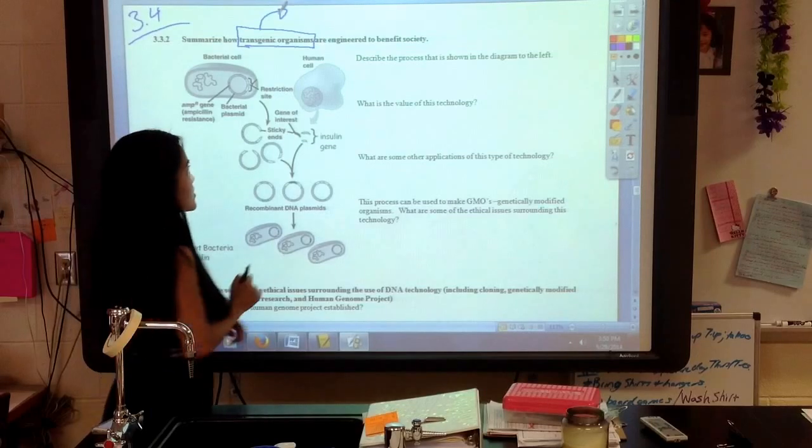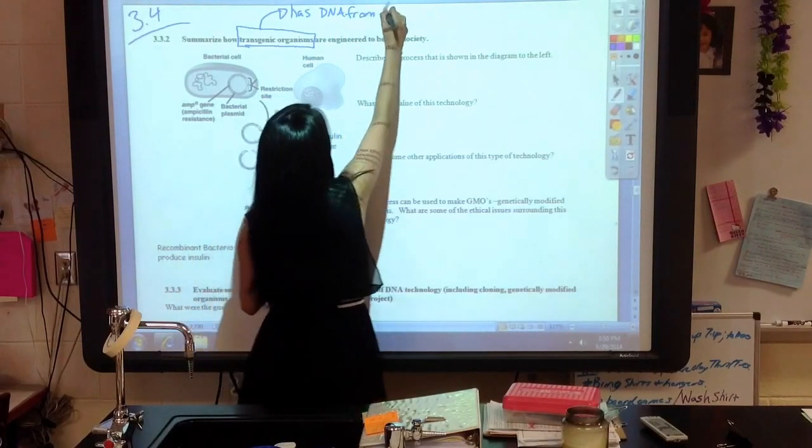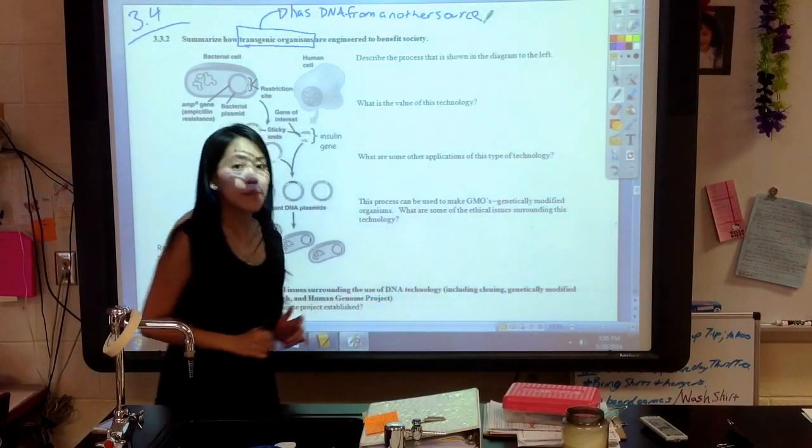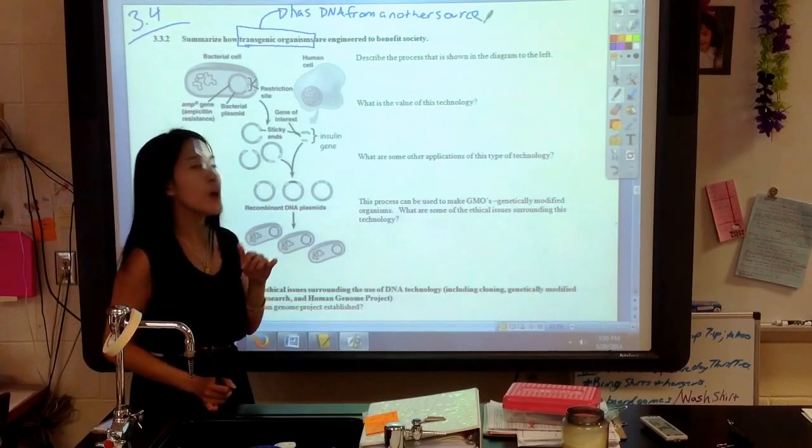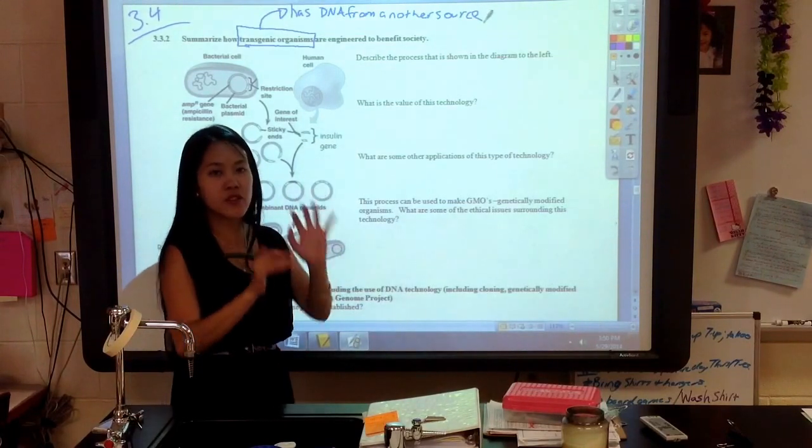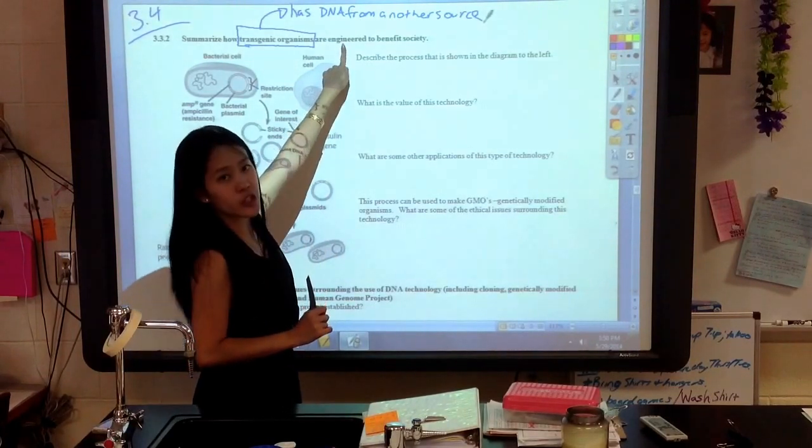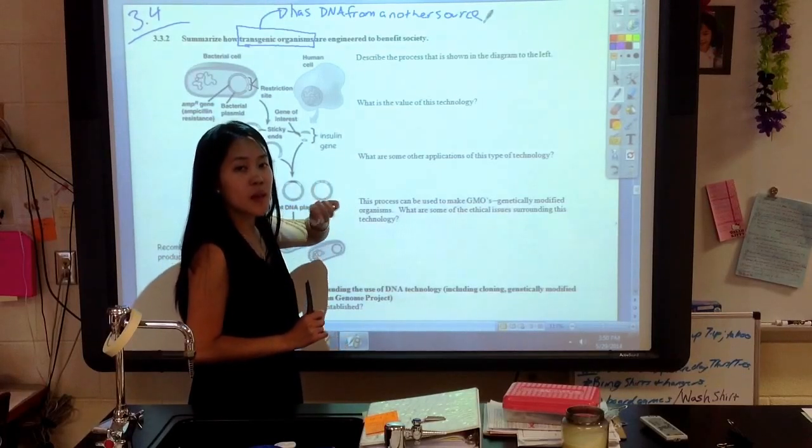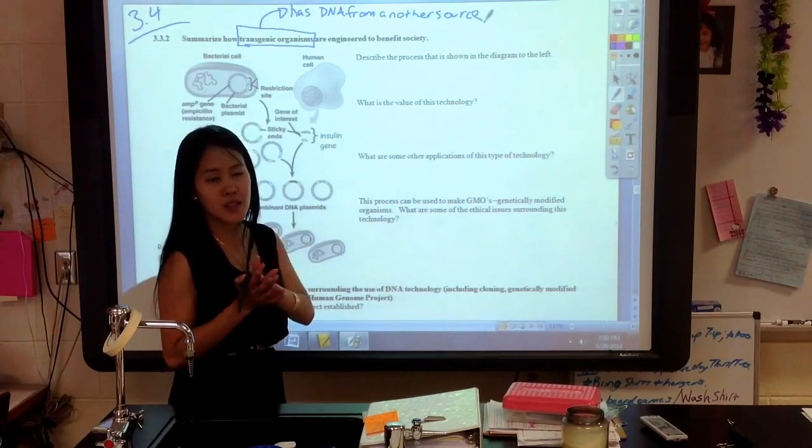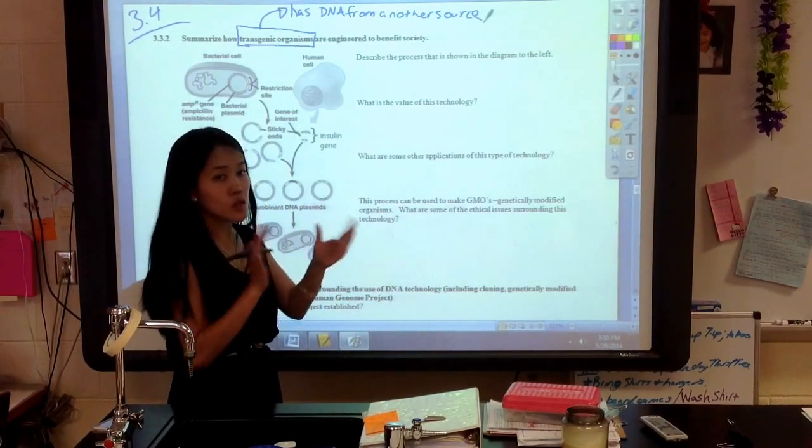A transgenic organism has DNA from another source. For example, in our notes in the video previously, we had a little video of these little marmosets. What scientists did is they actually engineered the DNA of that organism. They actually took the DNA from a jellyfish that glows and put that into the DNA of the marmoset. That's why when you put it under a light, the marmoset would have little glowing feet.